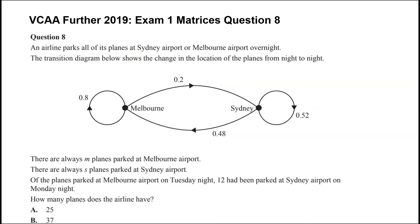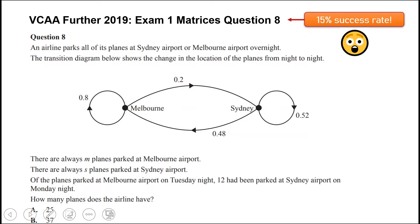This was the last question on the matrices module in Exam 1, 2019. We have a transition diagram which talks about the number of airplanes traveling from Sydney to Melbourne or Melbourne to Sydney. It's a particularly hard question — only 15% of students got this right. With five options, if you were randomly guessing you'd expect 20% to get it right. You can pause the video and have a read of the question if you like.